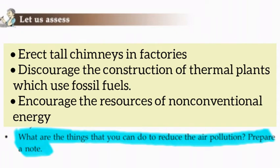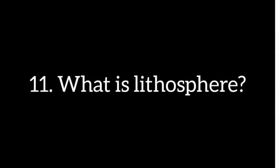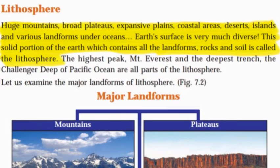Now we will see additional questions and answers. What is the lithosphere? The earth's surface has huge mountains, plateaus, expansive plains, coastal areas, deserts, islands and various landforms under oceans. This solid portion of the earth which contains all the landforms, rocks and soil is called the lithosphere.